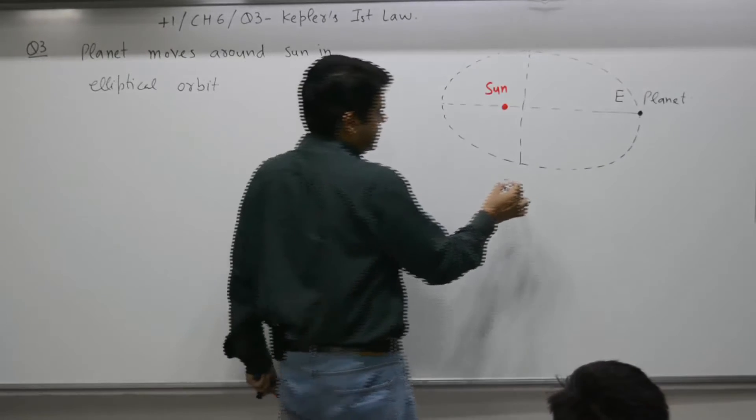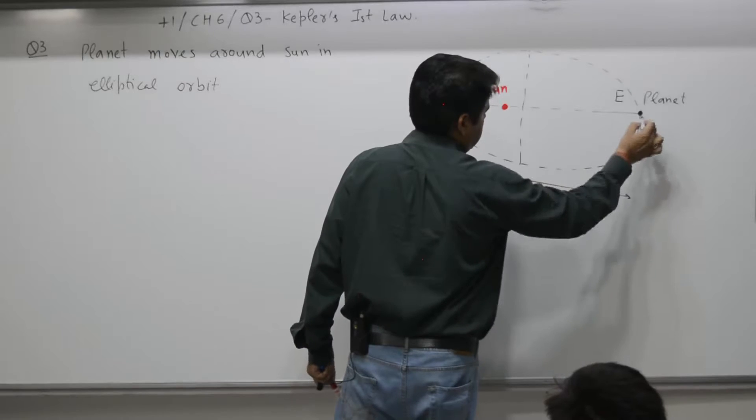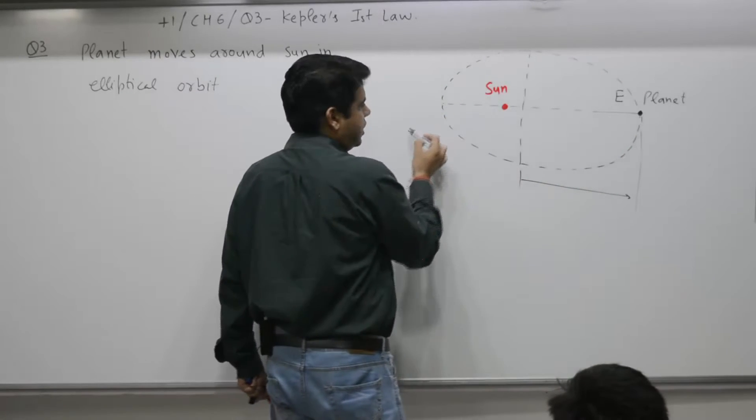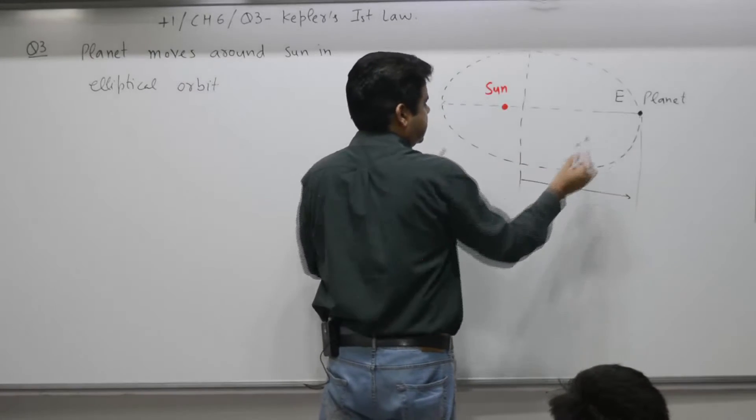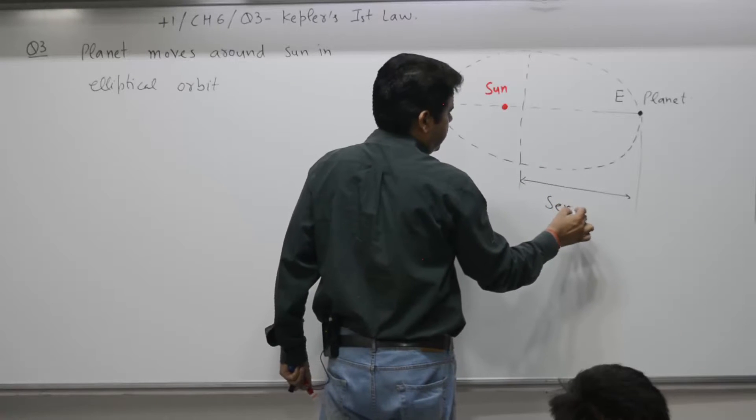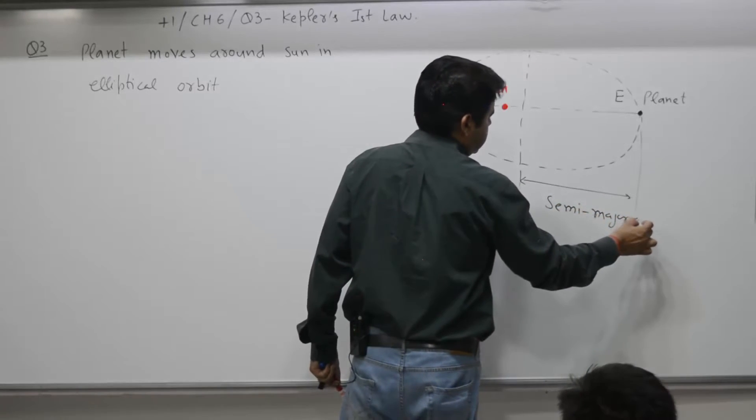This distance is known as, this total is known as what? Major axis. This is the semi-major axis.